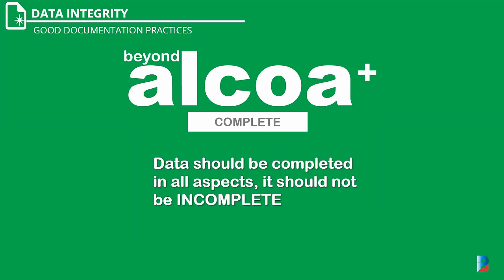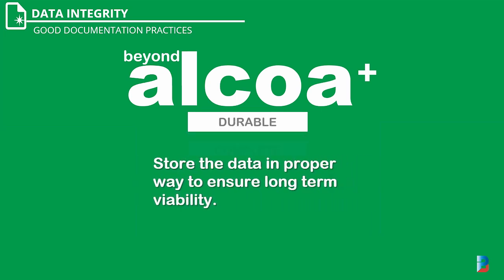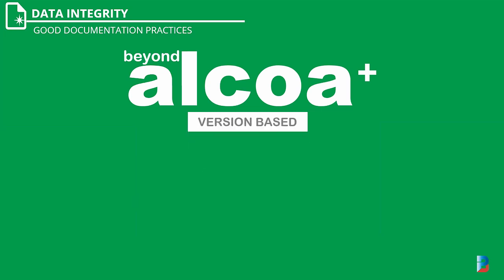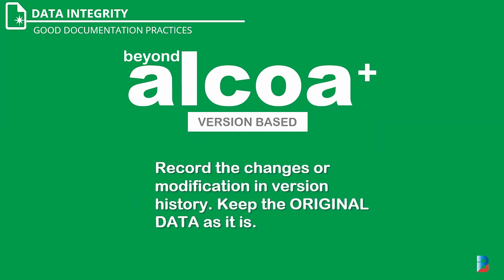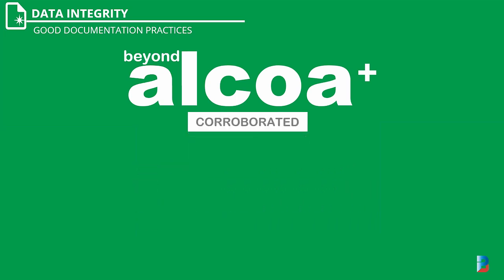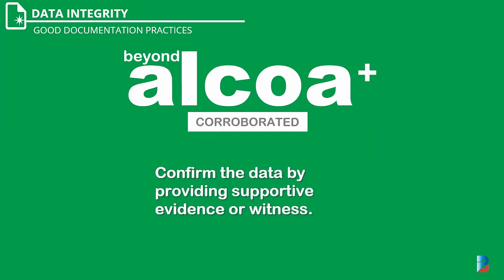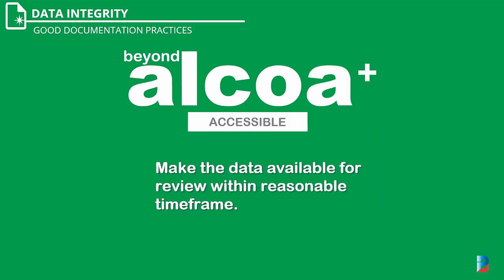Durable: store the data in a proper way to ensure long-term viability. Version-based: record the changes or modifications in version history and keep the original data as it is. Corroborated: wherever necessary, confirm the data by providing supportive evidence or witness. Accessible: make the data available for review within a reasonable time frame.